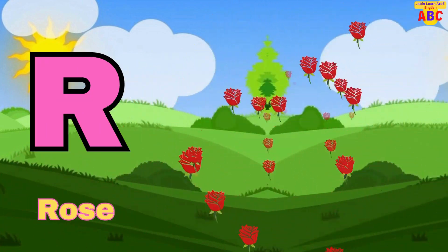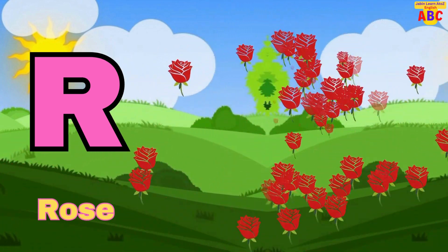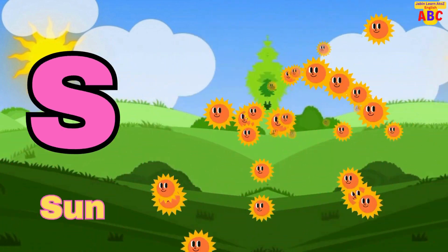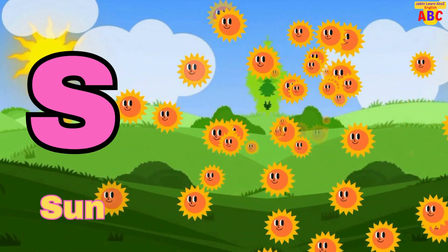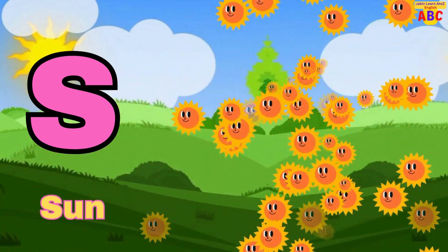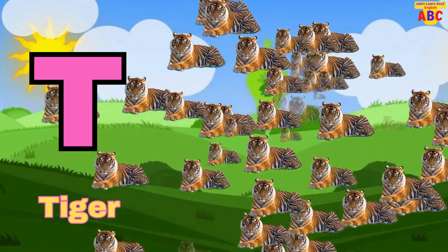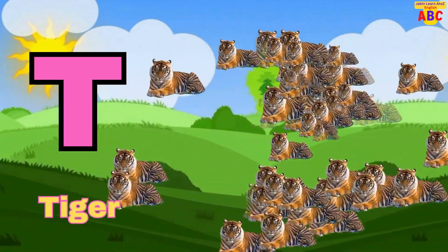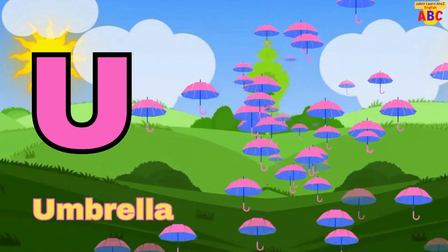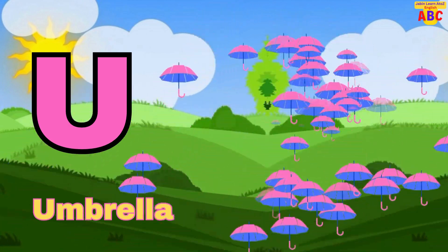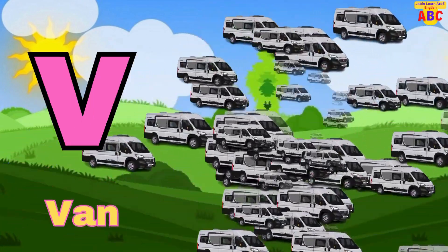R for Rose. S for Sun. T for Tiger. U for Umbrella. V for Vane.